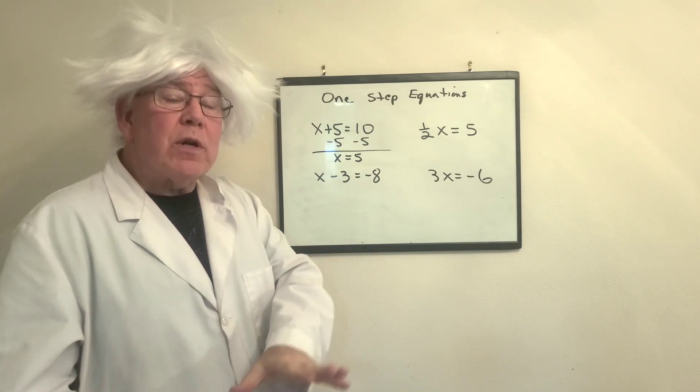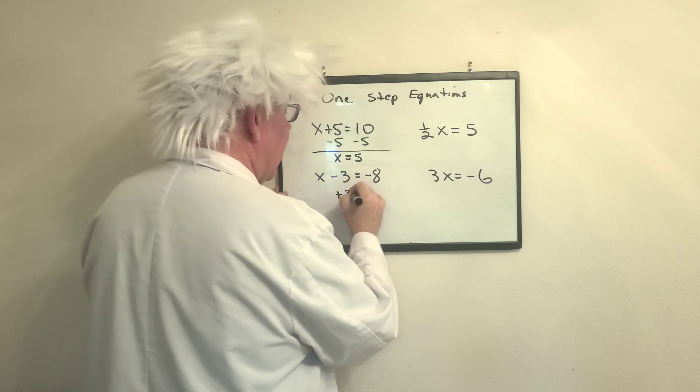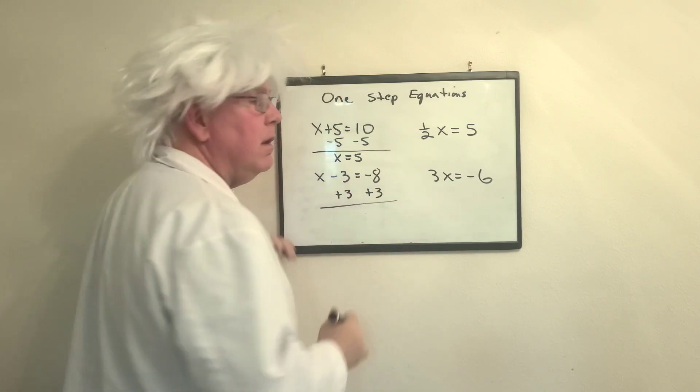To undo subtraction, we're going to undo that with addition. We will add 3 to both sides. Now, I've had kids do this, and they go, oh,